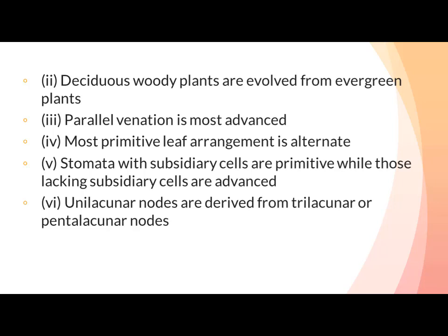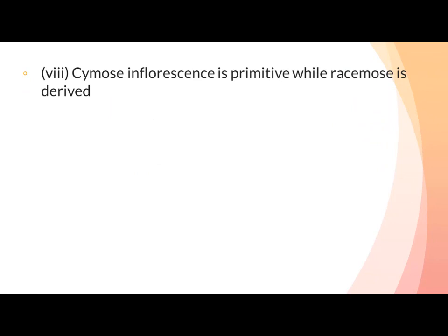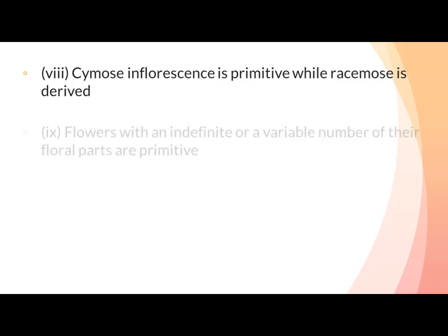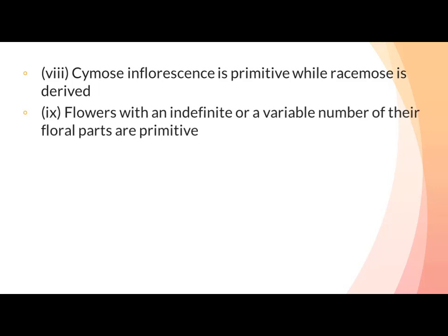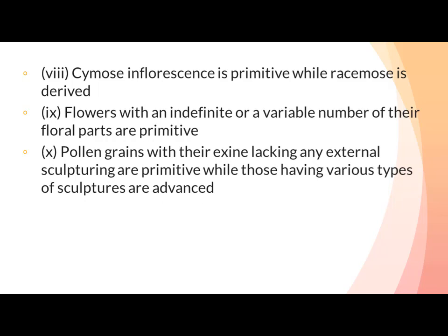Xylem fibers evolved from tracheids to libriform fibers through fiber tracheids. Cymose inflorescence is primitive while racymose is derived. Flowers with an indefinite or variable number of floral parts are primitive — flowers in which the number of floral parts is greater represent a primitive characteristic.